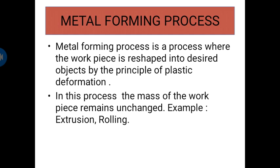In case of machining, material is removed to obtain the desired shape. In metal forming process, the mass of the workpiece remains unchanged as only the shape is changed, but the total volume of the material is utilized to obtain the desired object.